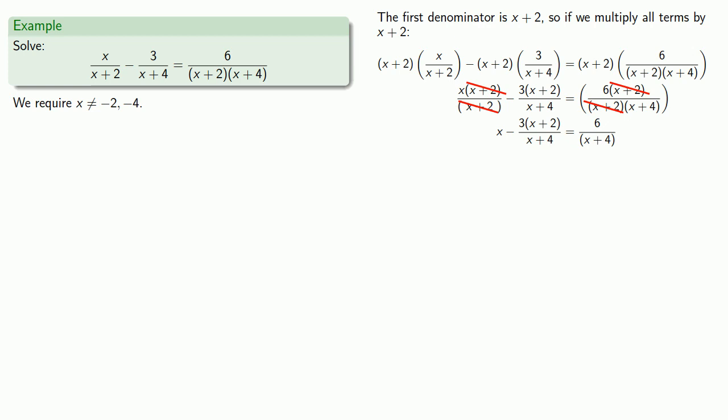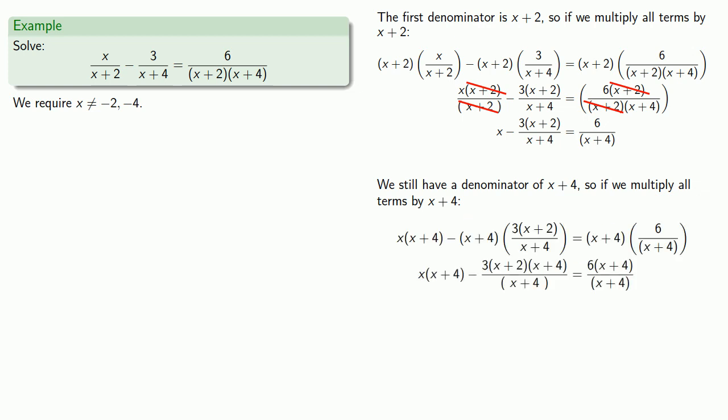Or maybe not. Don't be a politician. Always ask, what else can we do? And we still have a denominator of x plus four. So if we multiply all of our terms by x plus four. And now we have a series of fractions. So we can cancel out the common factors. And now we have an equation where there are no fractions.